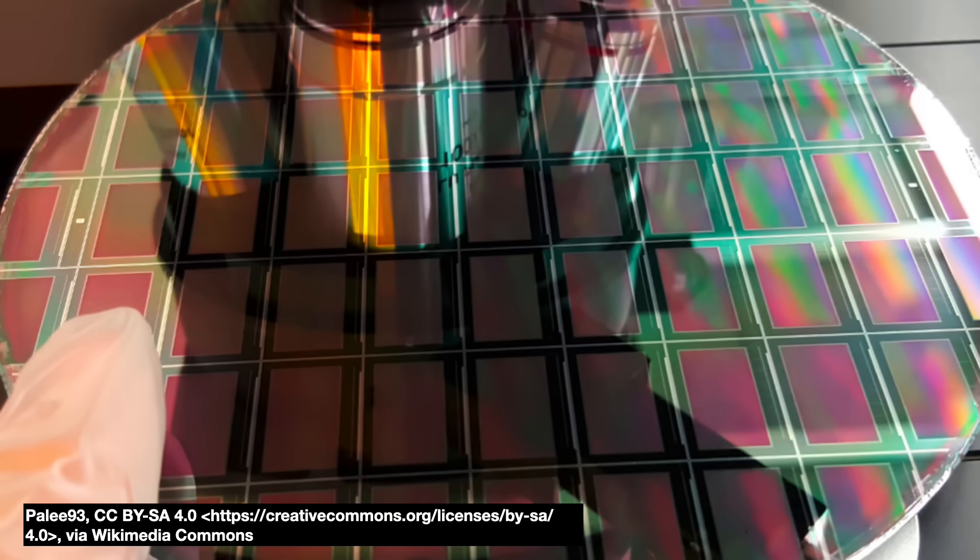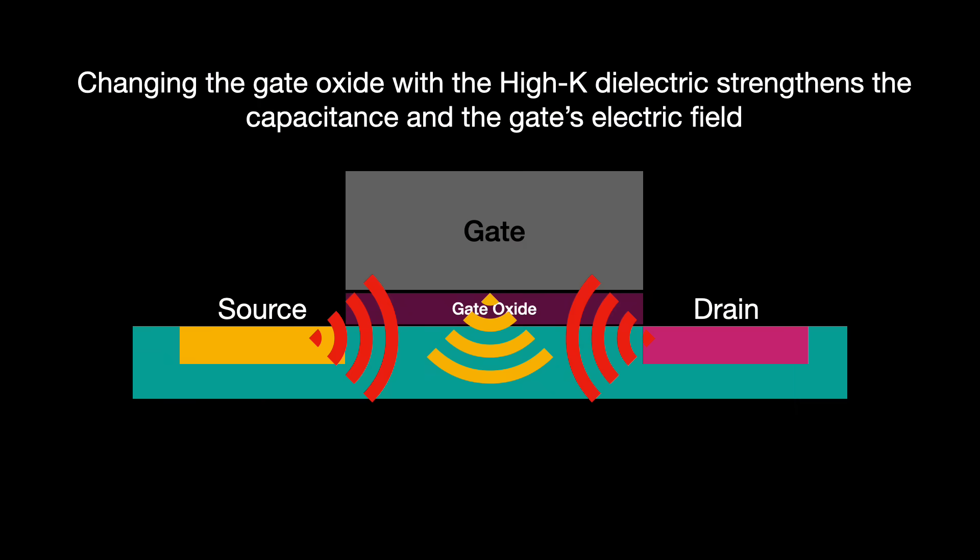For years the industry knew that this was coming. But for a long time they were able to ameliorate short-channel effects by lowering the voltage, heavily doping the channel or reducing the depths of the source and drain. Another big move was replacing the gate oxide from its prior silicon dioxide to one with a higher dielectric constant, or K. This strengthens the gate's capacitance, thus making the electric field projected by the gate more powerful so to dominate the channel.